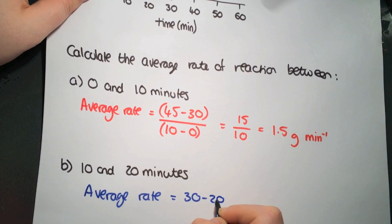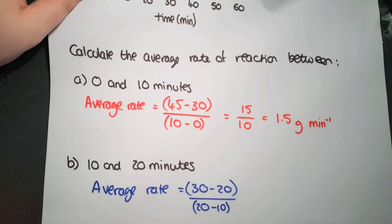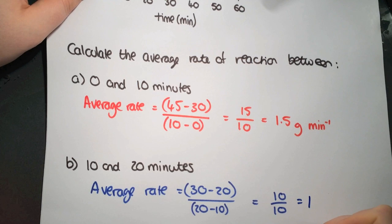So 30 minus 20 divided by 20 minus 10 for the time. So that's 10 divided by 10 equals 1. And again, it's in grams per minute.